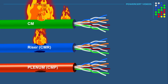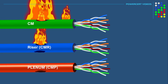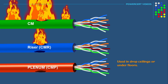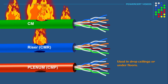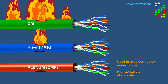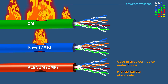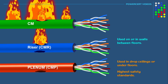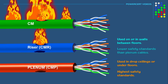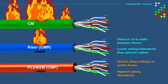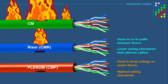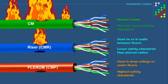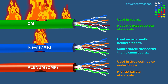In conclusion, plenum rated cables are used in drop ceilings or under floors and have the highest safety standards. Riser cables are used on and in walls between floors and have lower safety standards than plenum cables. And CM cables are used in rooms and have minimal safety standards.